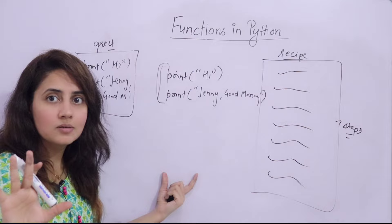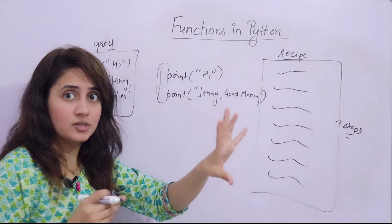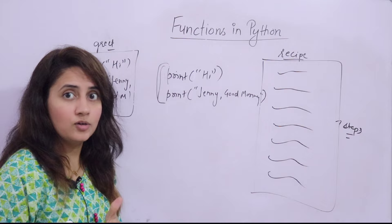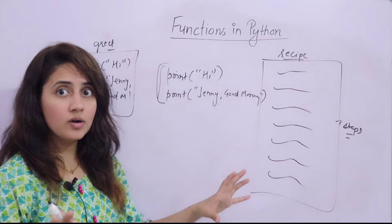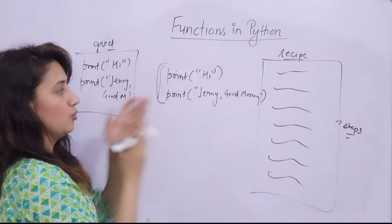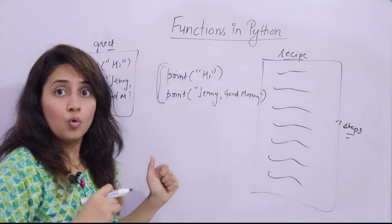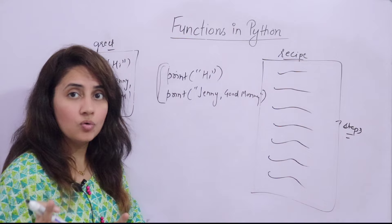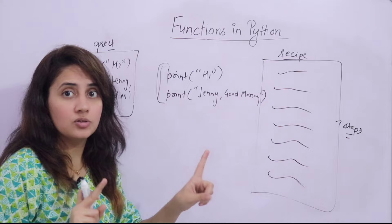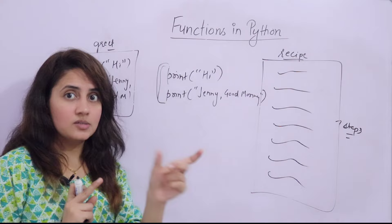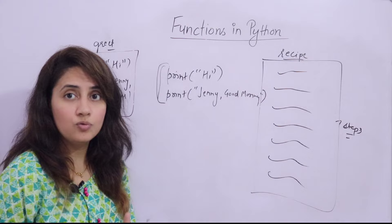There are two major steps: first, define the function; then call the function. A function is basically a block of statements or block of code which performs a specific task when it is called. It will only perform those tasks when you actually call that function. That is the definition of a function.